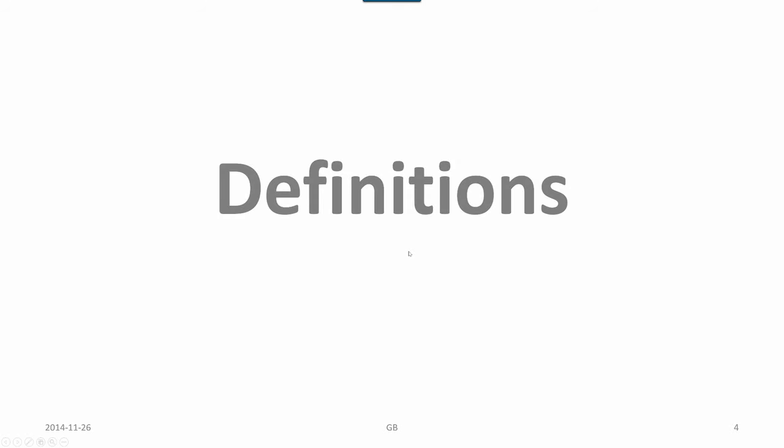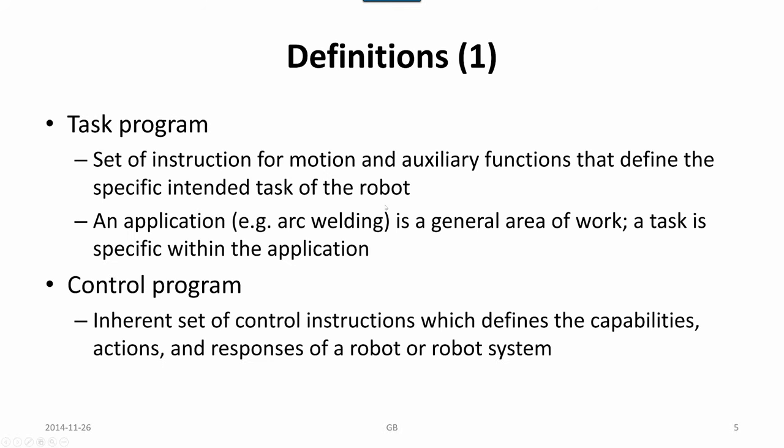Some basic definitions which are part of the standards terminology related to robotics. A task program is a set of instructions for motion and auxiliary functions that define the specific intended task of the robot. An application for an industrial robot could be arc welding, polishing, machine tending, assembly. The task is specific within the application.